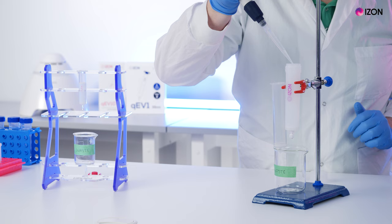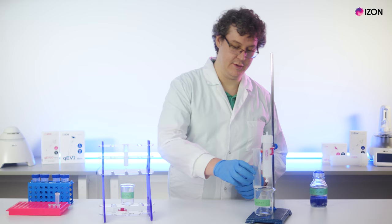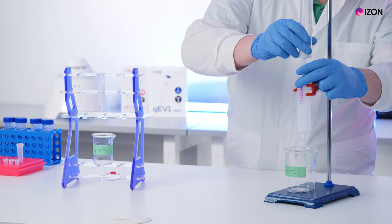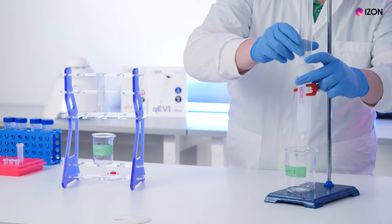If there is any air, top the connector up with buffer so that there is a small volume of buffer on top of the column connector. Connect the reservoir to the upper junction cap firmly.